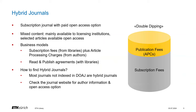Hybrid journals are subscription journals that offer a paid open access option for individual articles, so they consist of mixed content. While much of the content is only available to subscribing institutions, selected articles might be open access. When publishers started converting traditional subscription journals to hybrid journals, they added the income from individual authors paying an APC on top of existing subscription income. This business model is called double dipping and has been criticized as unsustainable. This is why publishers and libraries have moved to so-called read-and-publish agreements, which include access to subscription content as well as open access publishing for institutional authors in hybrid journals for one fixed annual price.